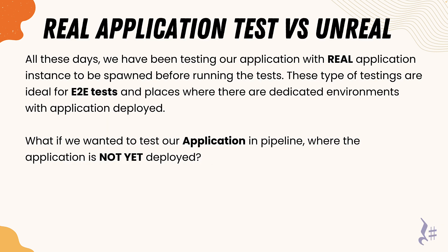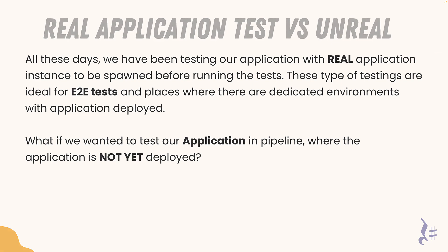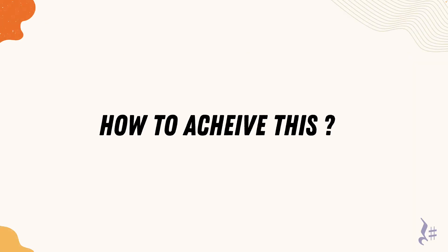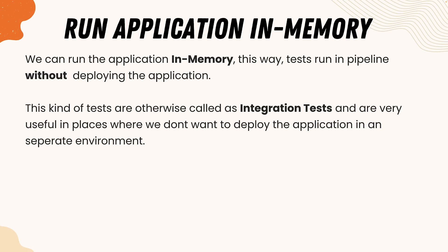All these days, we have been testing our application with a real application instance spawned before running the tests. These types of tests are ideal for end-to-end testing and places where there are dedicated environments with applications deployed. But what if we want to test our applications in a pipeline where the application is not yet deployed? This can be done using what is called an in-memory application — we can run the application in memory, allowing tests to run in a pipeline without deploying the application.